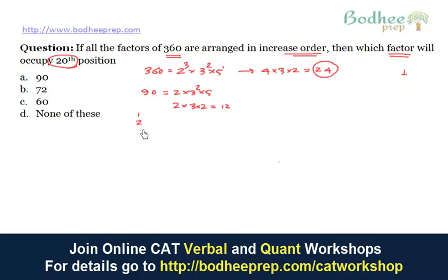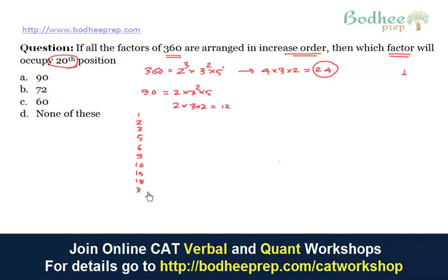I can list all the factors of 90 easily: 1, 2, 3, 5, 6, 9, 10, 15, 18, 30, 45, and 90. Note that 4 is not a factor. These are the 12 factors of 90, deliberately arranged in increasing order.